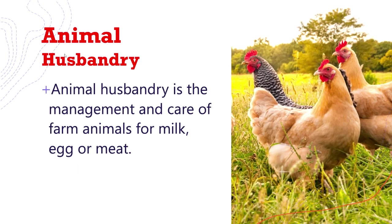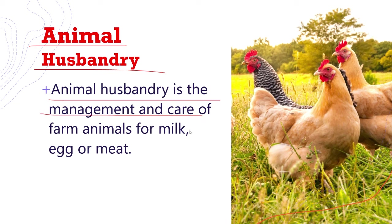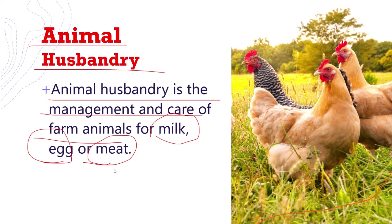The last topic of this chapter is animal husbandry. Animal husbandry is the management and taking care of farm animals or domestic animals for the products they provide, such as milk, eggs, or meat. The process of taking care of domestic animals for these products is called animal husbandry.